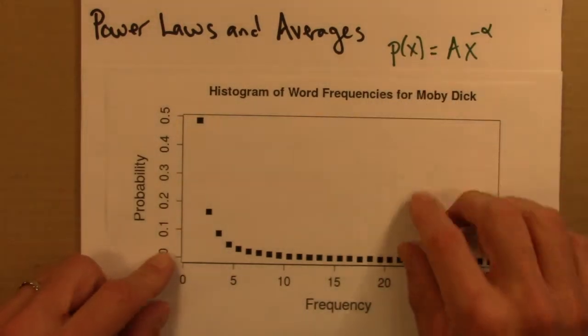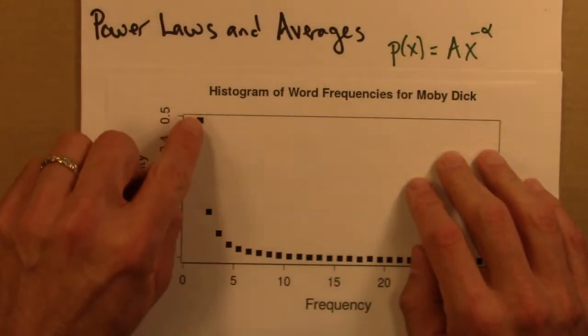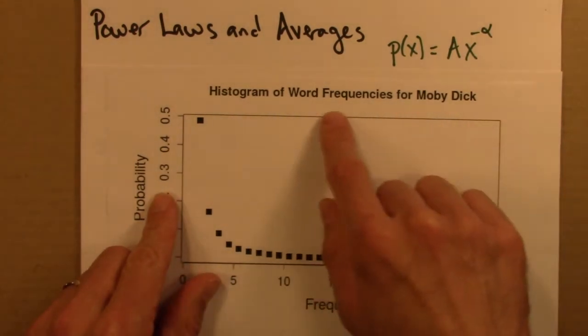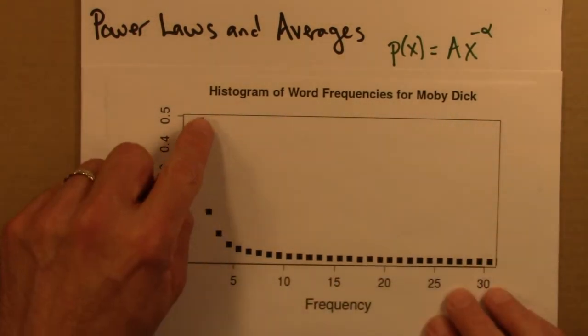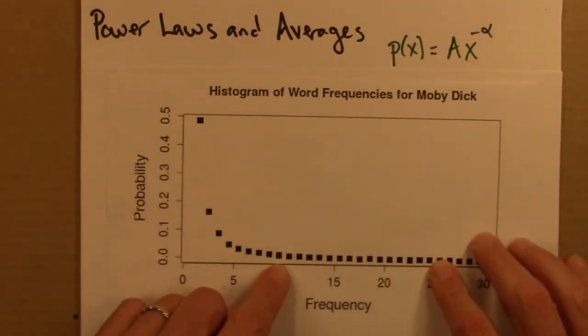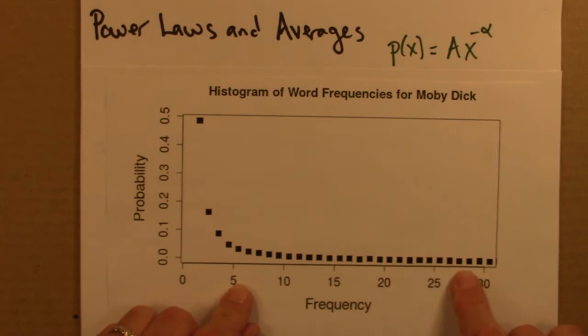So power laws, as we've seen, have a lot of the action concentrated on small values. This is the histogram for the Moby Dick word frequencies again. But it has this long tail. It decays. But some very large values do happen, rarely but not unthinkably often.